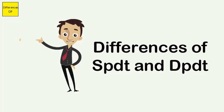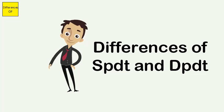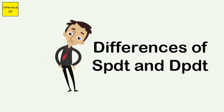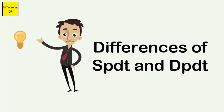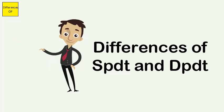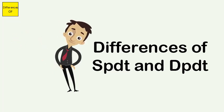SPDT has two circuits, DPDT has four circuits. The SPDT switch has two positions — on/on. The DPDT switch can have two to three positions: on/off/on.